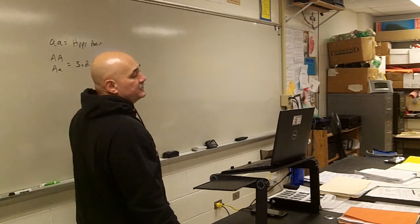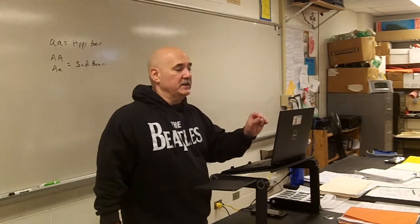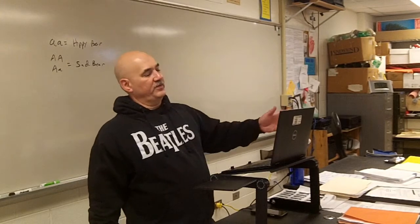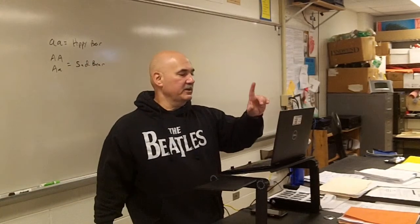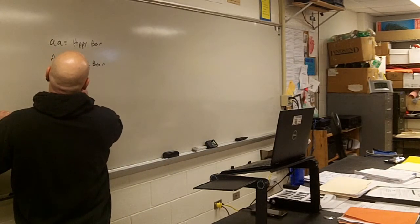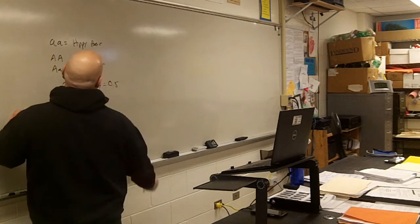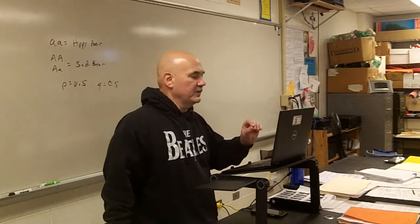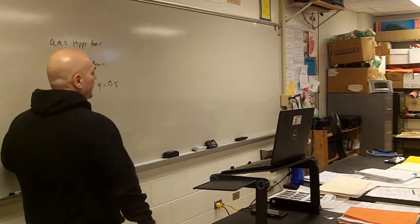So what I want you to do is pull out from your box, your bag, or your bowl of bears — 15 sad bears. Pull 15 sad bears out. We'll do the lab first and then we'll do all the calculations later. So if I have 15 sad bears, my P is equal to 0.5 and my Q is equal to 0.5, because I'm saying that those sad bears are going to be heterozygous.